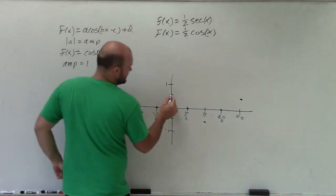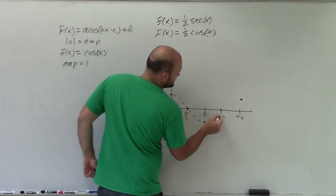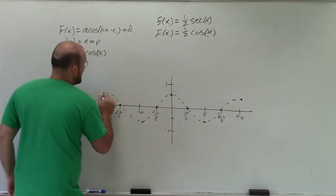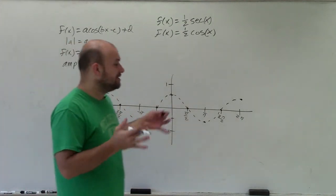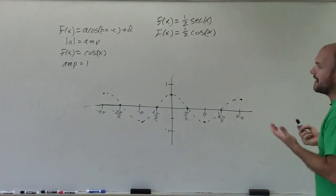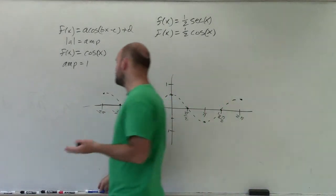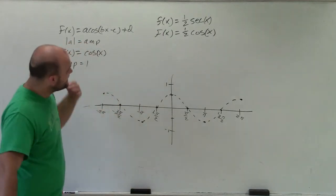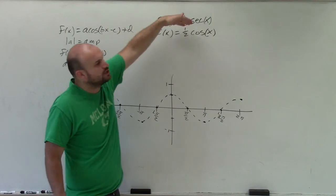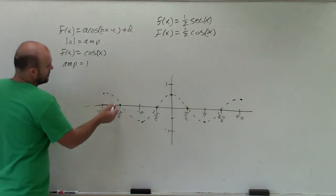Now again, we are not really trying to graph cosine, so I'm going to use dashed lines to represent the graph. We are trying to graph secant. Well, secant is the reciprocal of cosine. So we can use the graph to help us determine where the asymptotes are going to be. And the asymptotes for secant is where the cosine graph is equal to 0.